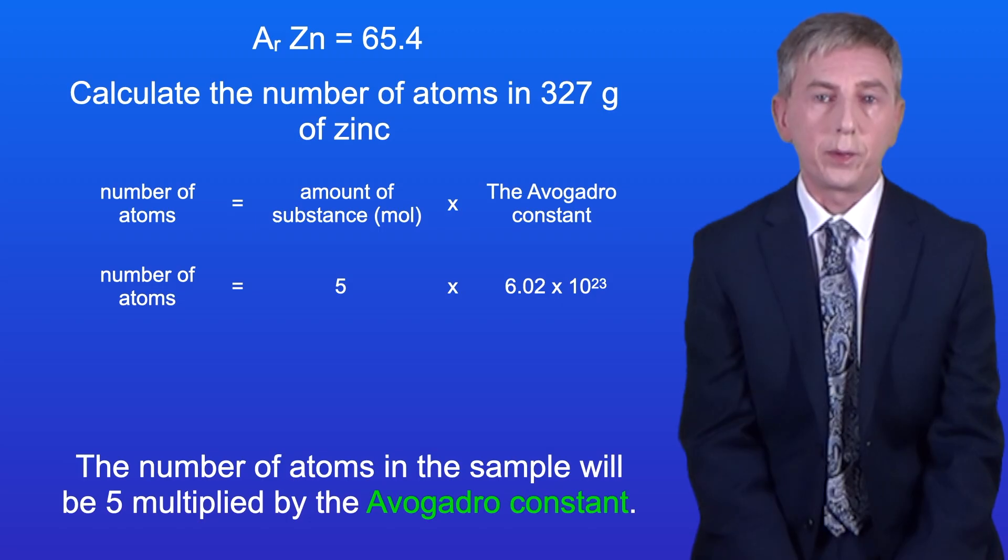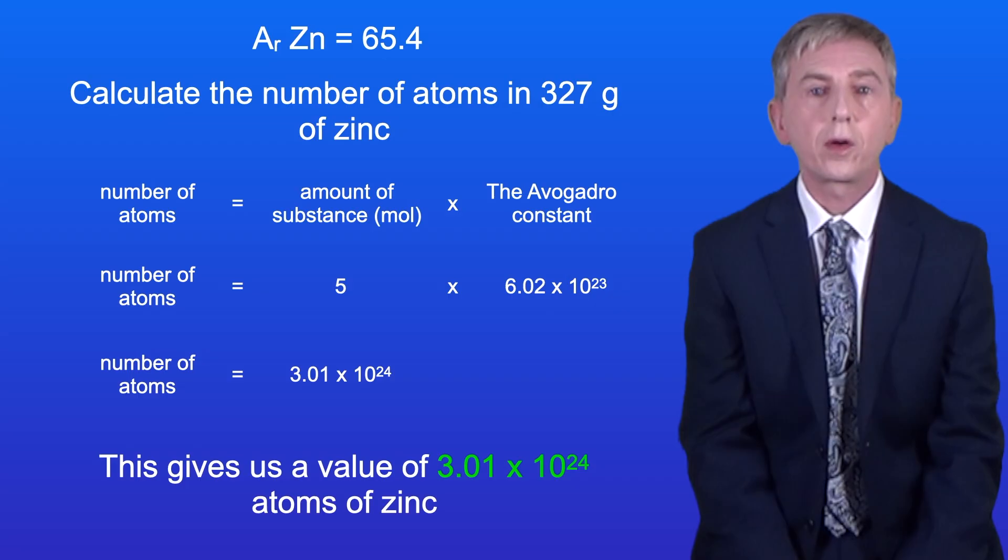The number of atoms in the sample will be 5 multiplied by the Avogadro constant. This gives us a value of 3.01 times 10 to the power of 24 atoms of zinc.